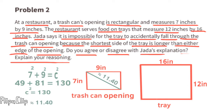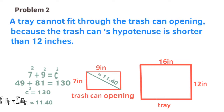We need to find the square root of 130. The square root of 130 is approximately 11.4 inches. A tray cannot fit through the trash can opening because the trash can's diagonal is shorter than 12 inches, the smallest dimension of the tray.